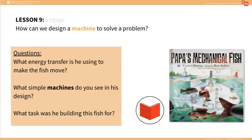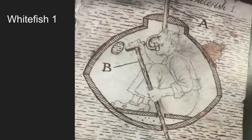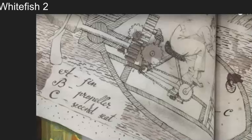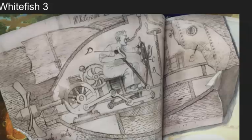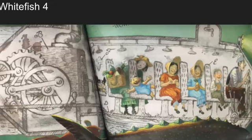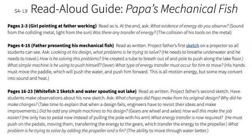In the Engage portion of this lesson, you will read aloud from the book Papa's Mechanical Fish. As you read the book, display the different sketches of his designs. Use the sketches to ask students, What energy transfer is he using to make the fish move? What simple machines do you see in his design? What task was he building this fish for?